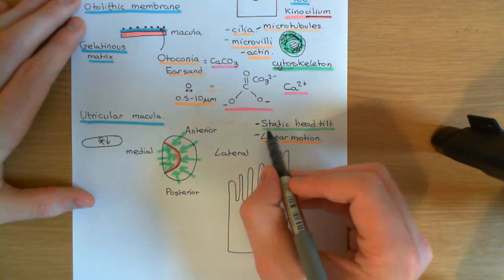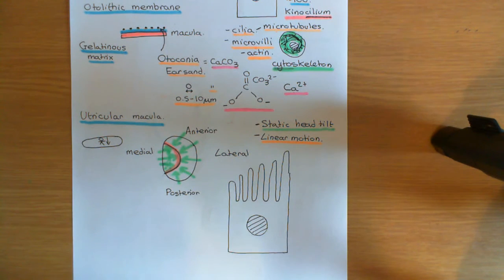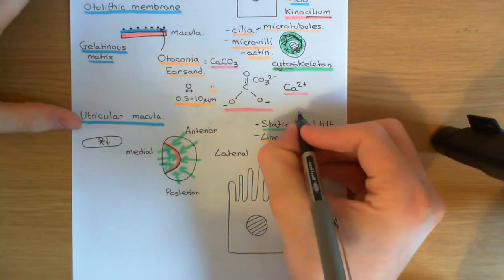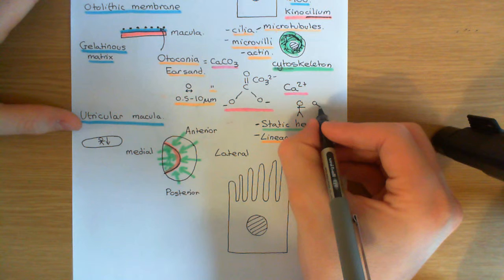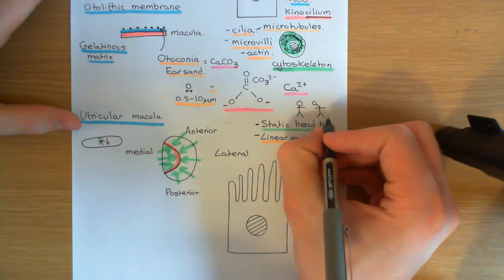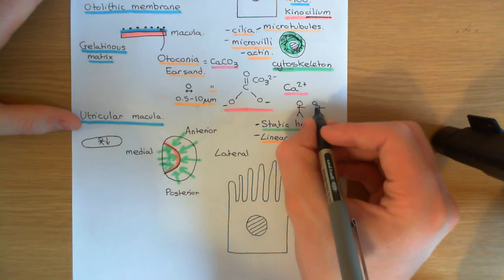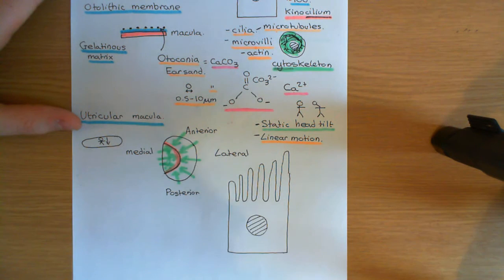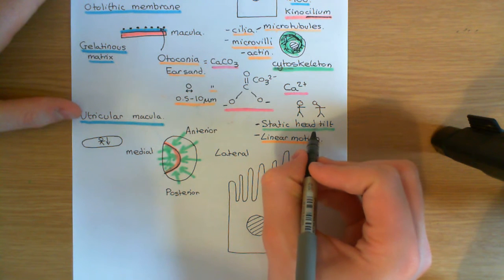The maculae encode information about our static head tilt — the orientation of our head within three-dimensional space. So if you tilt your head to an extreme angle, even if you close your eyes, you will be aware that your head is tilted. One of the ways by which you are aware of this is through the sensory information being encoded by the saccular macula and the utricular macula.